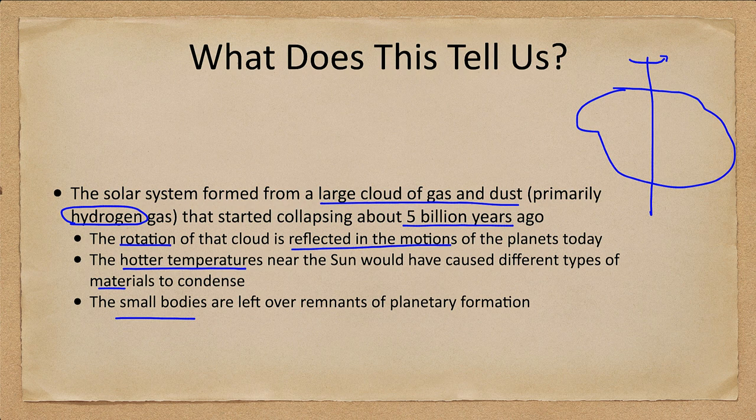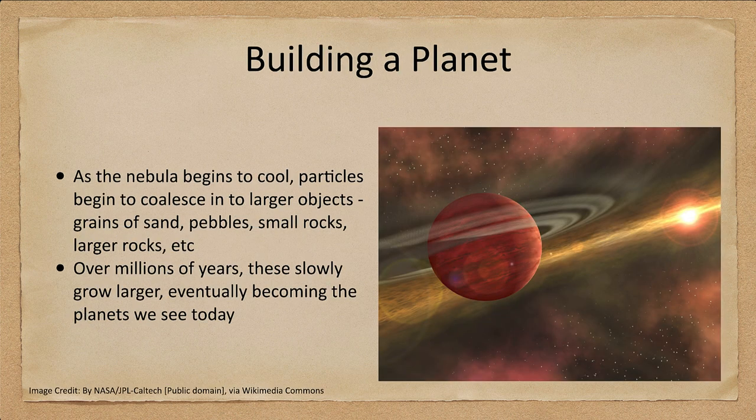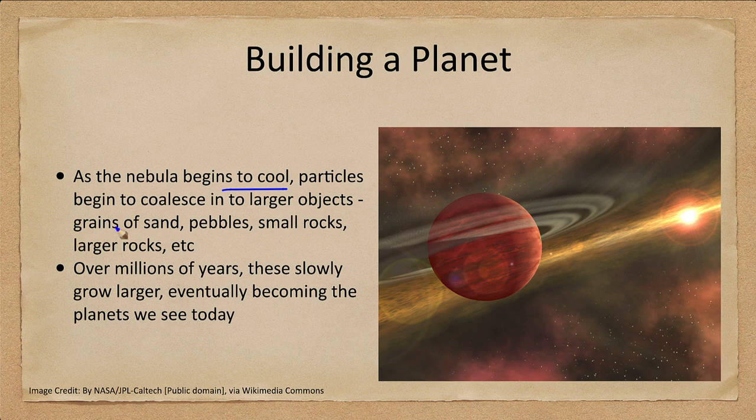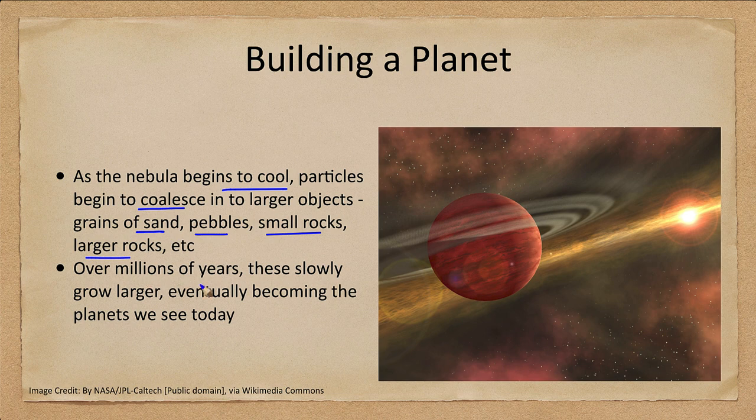Let's look a little bit at how we go about building a planet. What happens is that you start off with very small objects. As the nebula cools, the particles start to grow and they collide and they coalesce into larger objects: grains of sand, pebbles, small rocks, larger rocks. Over millions of years these continue to grow larger, becoming first what we call proto-planets, just before they become a planet, and then as they gather enough material, becoming the planets that we see today.